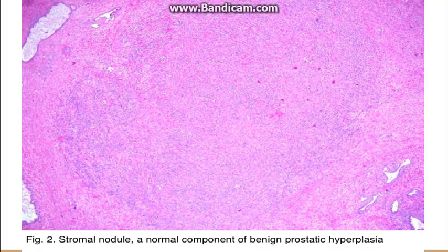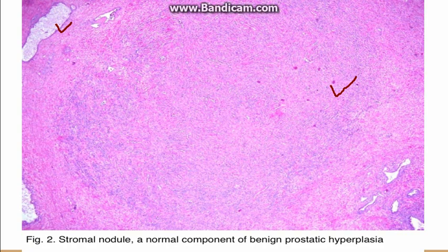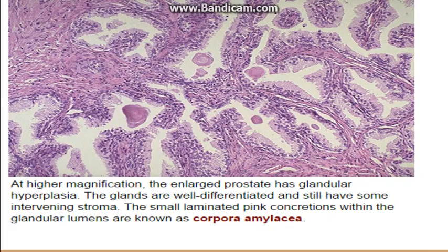Looking at the microscopy: this picture shows a nodule composed mainly of stroma with one gland visible — a stromal nodule. In another image, glandular predominance can be seen with many cystically dilated glands. These glands contain secretion known as corpora amylacea in their center.